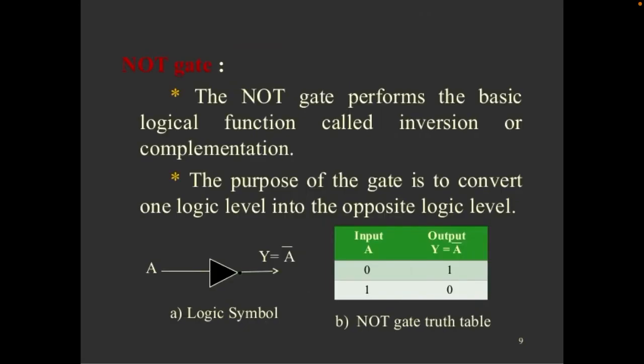Next gate is NOT gate. The NOT gate performs the basic logical function called inversion or complementation. The purpose of the gate is to convert one logic level into opposite logic level. The input is NOT gate, the output is 1. When input is 0, output is 1. It is the opposite of the logic levels.